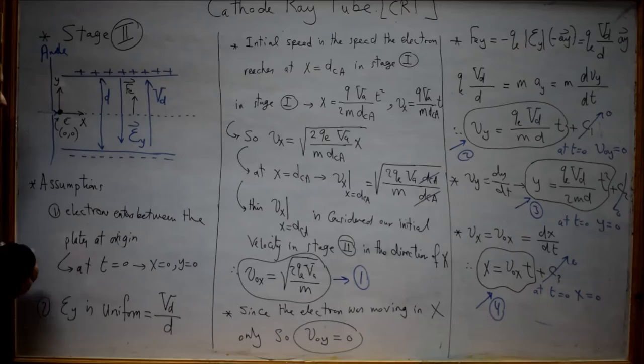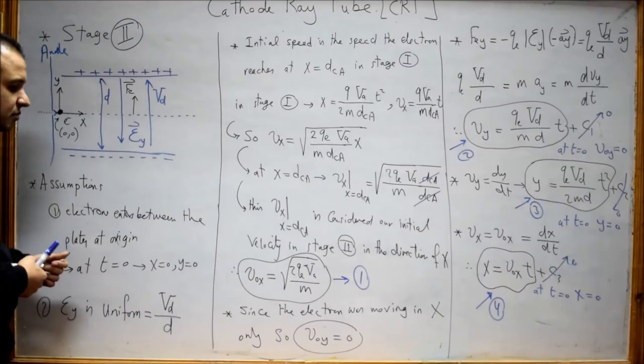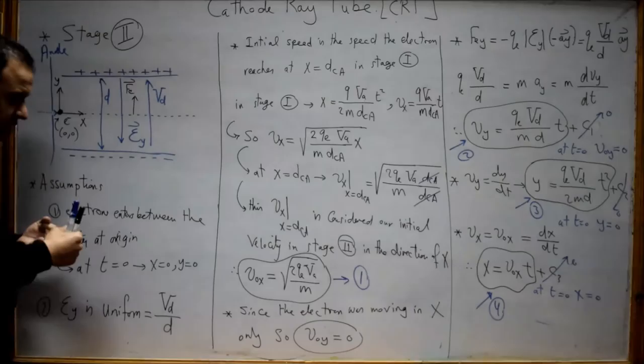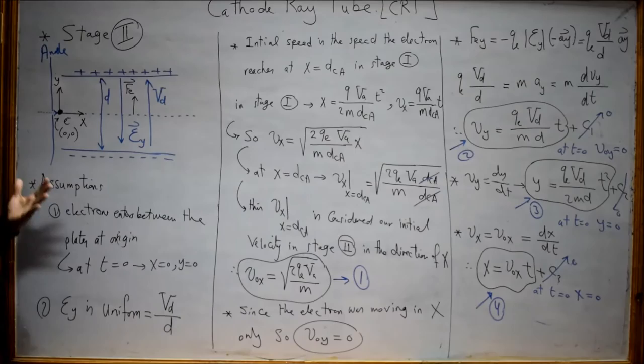To get our motion equations — the velocity in X, the displacement in X, the velocity in Y, and the displacement in Y — I must make some assumptions to obtain these four equations.